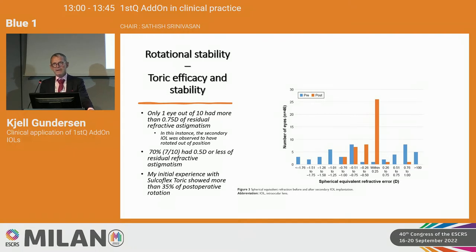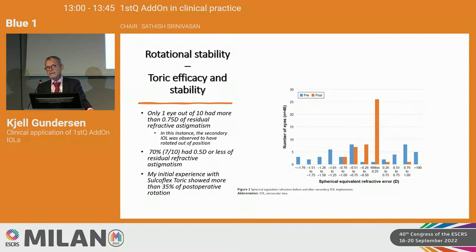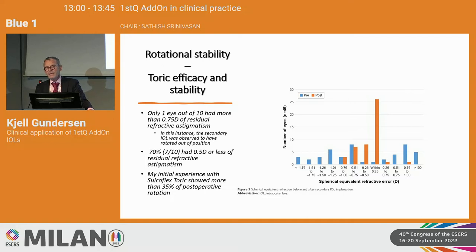Gundersen assessed toric stability, noting that a previous lens he used — the Rayner Sulcoflex — showed greater than 30–35% rotation when used for toric correction, which is unacceptable. In his FirstQ study of ten eyes, only one had more than 0.75 D residual refractive astigmatism, and 70% had less than 0.5 D — a completely different toric stability profile compared to his initial experience.